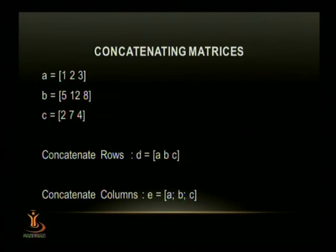I have a matrix, say, A, which is a vector, actually, 1, 2, and 3. Vector B, 5, 12, and 8. And vector C, 2, 7, and 4. Now, I can join these three vectors to form a matrix in different ways. You can add these vectors as a row, or single row, or you can add these as a multiple rows also.